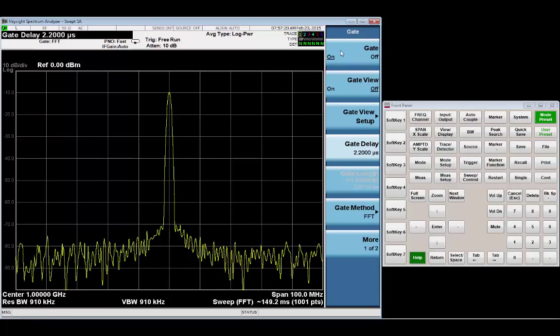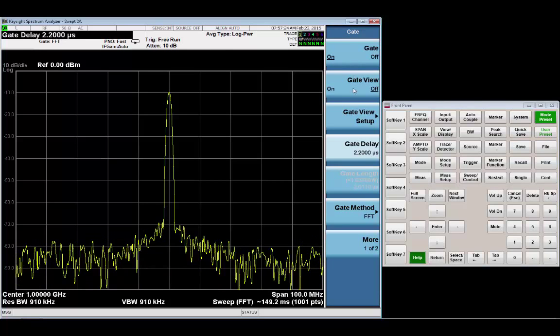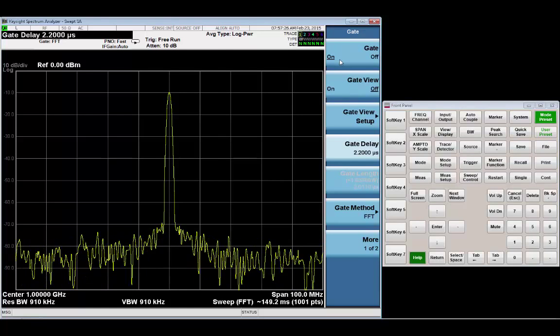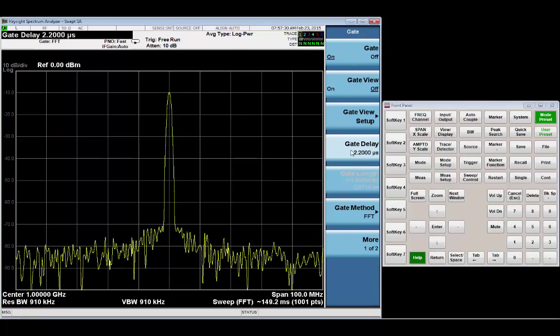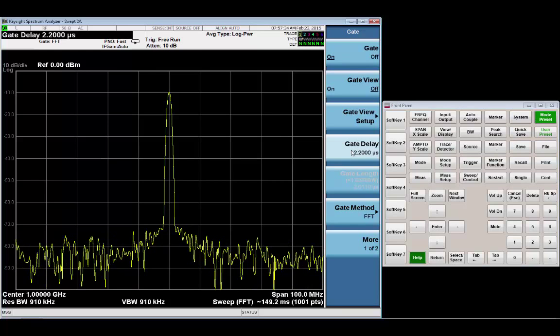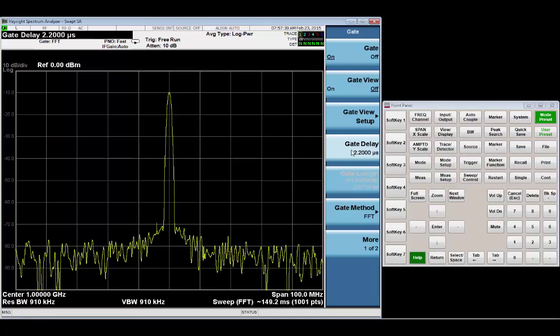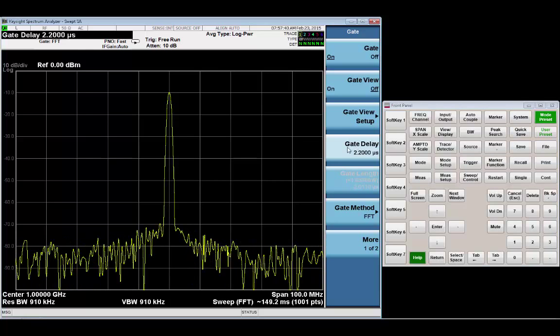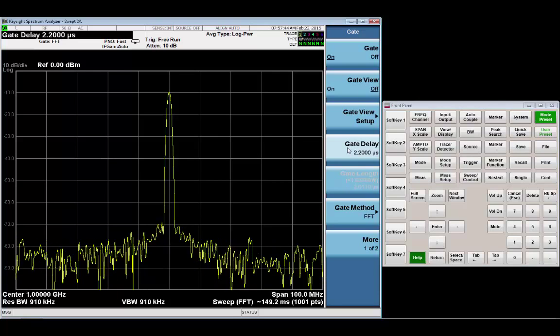Now, from here, you can leave gate on and gate view off. And while you're looking at it in the frequency domain, while it's being gated, you can still adjust the gate delay. Kind of tweak that a little bit. You can see that on the signal, I have a little bit of a skirt. And it's a CW signal, but I still have a skirt there. So, that means I could go ahead and adjust my gate delay a little bit to kind of optimize it for the measurement. So, I'm going to move it over to the left a little bit. And you can see that I have a much cleaner skirt now.